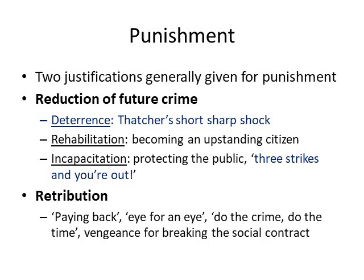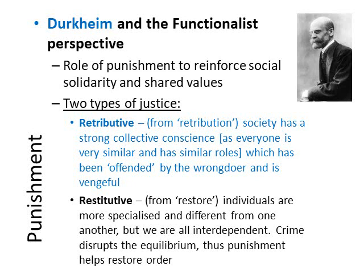The other justification for punishment is retribution — an eye for an eye, a tooth for a tooth. If someone has committed a crime against you, you want some sort of pain visited upon them: if you do the crime, you do the time, to pay back to society. In many ways this is about vengeance on behalf of society for that individual breaking the social contract, or in a more functionalist sense, upsetting the shared value consensus.